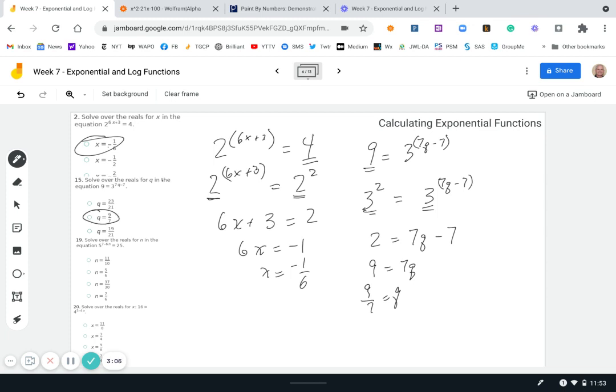Okay, let's look at this next one. 5 to the 7 minus 6n equals 25. We're going to make the 25 a power of 5, that's 5 squared. And now we have 5 to the 7 minus 6n, and so we can set the exponents equal to each other, equals 2.